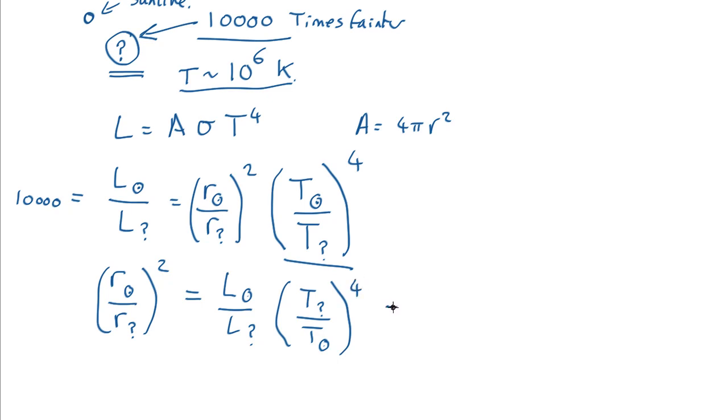Now if we plug numbers into that, this is 10,000. The temperature of the mystery object is a million degrees divided by the temperature of the Sun, which is about 6,000. Which comes out as 7.7 by 10 to the 12.